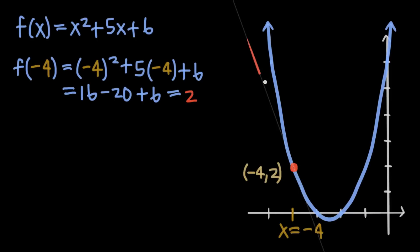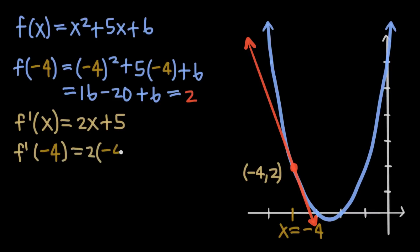And now we just need to know the slope of the tangent line that'll pass through this point. Luckily, we know that the slope at any given point on the function is given by the derivative of that function. At x equals negative 4, the derivative of the function is equal to negative 3.